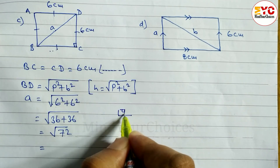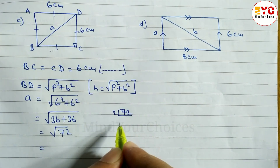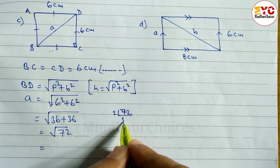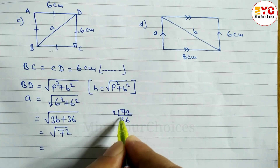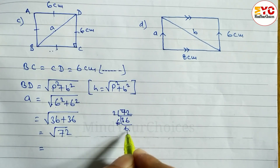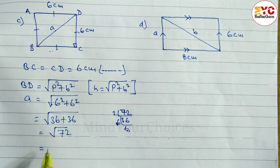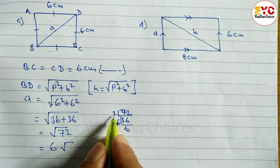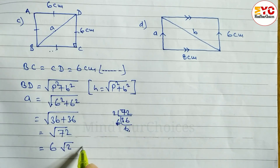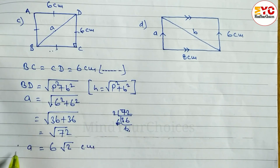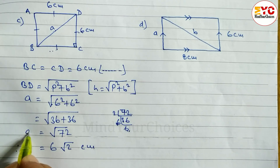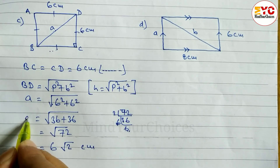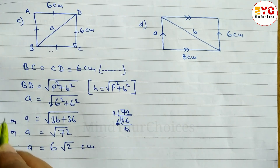To simplify root under 72, we find the factors: 72 divided by 2 gives 36, and 36 is 6 squared. We can write two numbers outside the root and one single digit inside. So the value of a is equal to 6 root under 2 centimeters. Do not forget to write centimeters.